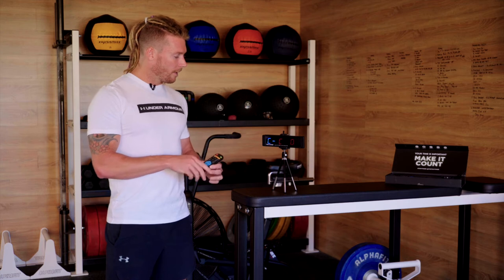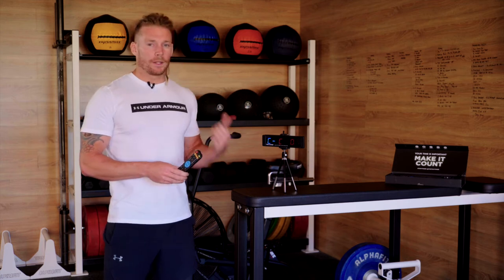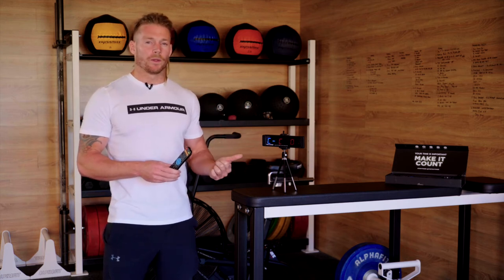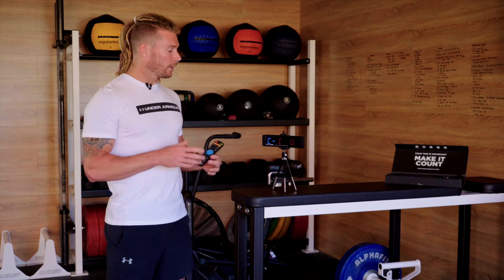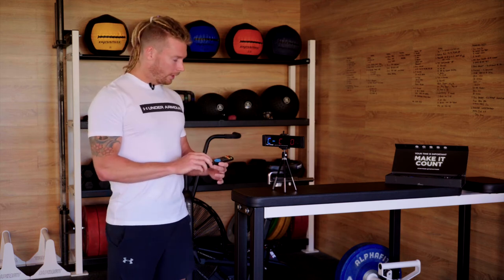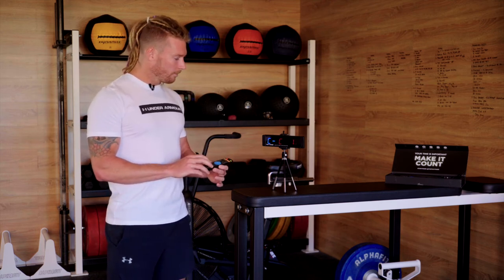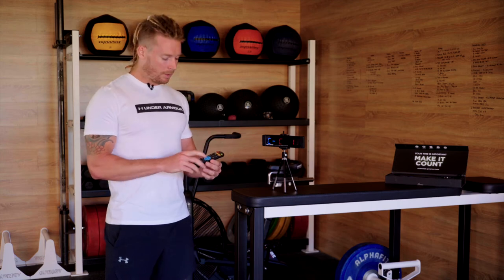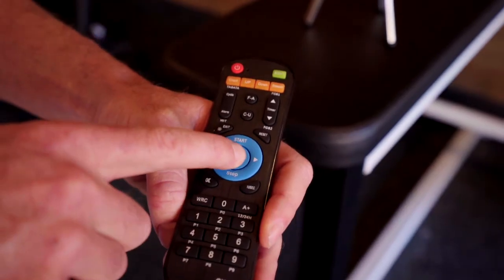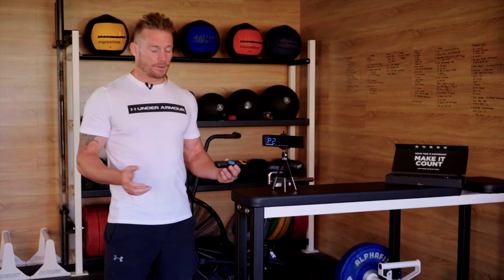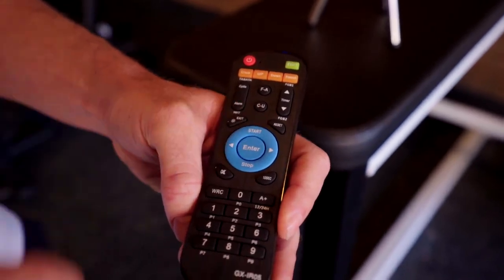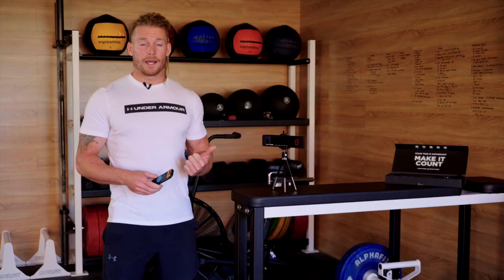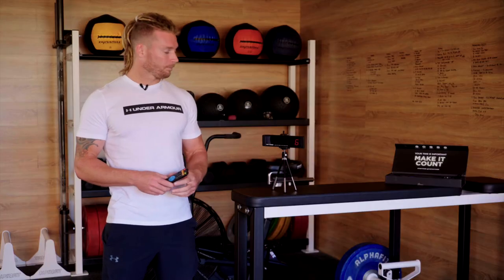Once you've clicked exit, this is where we can set how many rounds or how many minutes we want this EMOM to go for. So let's say we want to do a 10-minute EMOM — you're going to click 01 and that'll be a 10-minute EMOM. Press enter and then your timer is ready to go. You then click start and it'll do a 10-second countdown into the start of your EMOM.